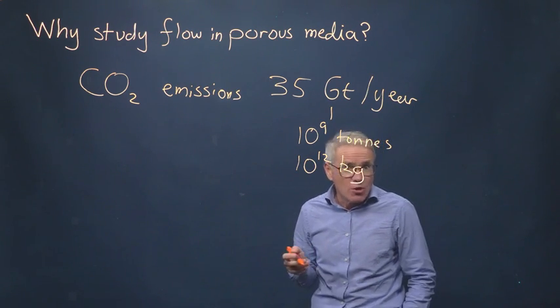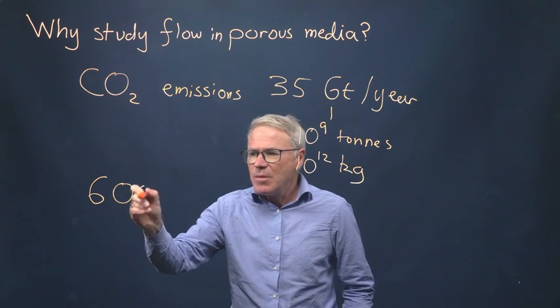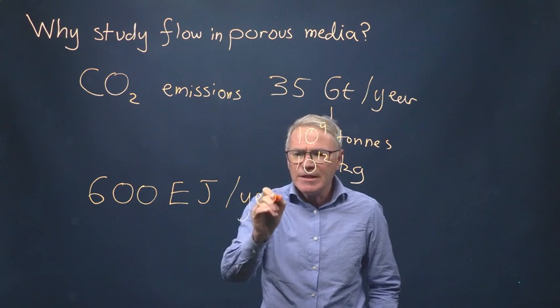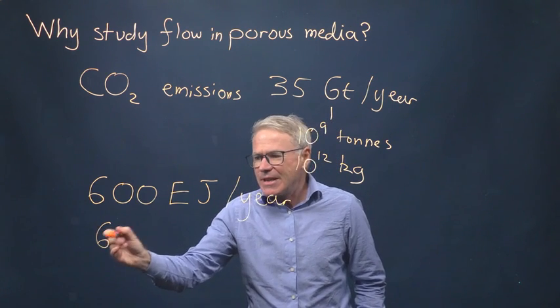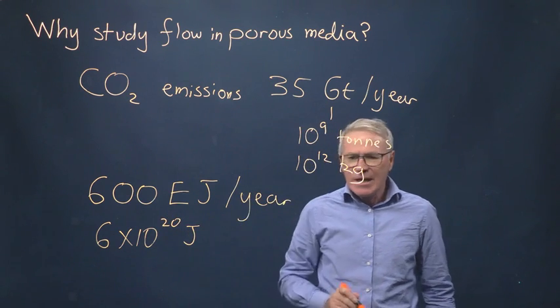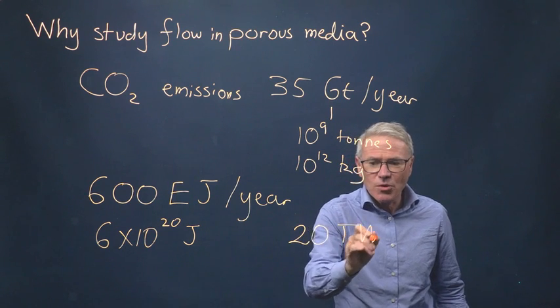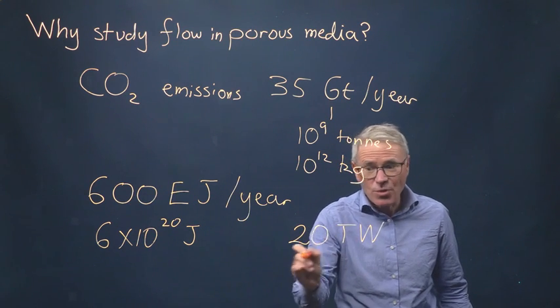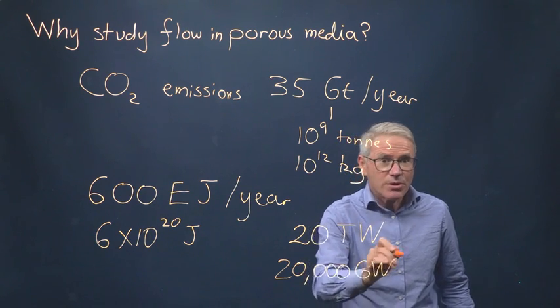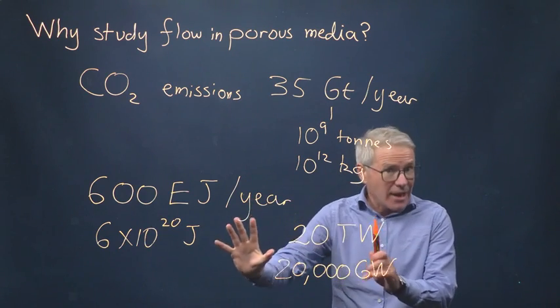Now let's think about renewable energy. Currently, we produce every year 600 exajoules per year. This is 6 times 10 to the 20 joules. This is equivalent to approximately 20 terawatts. That's 10 to the 12, so it's 20,000 gigawatts.